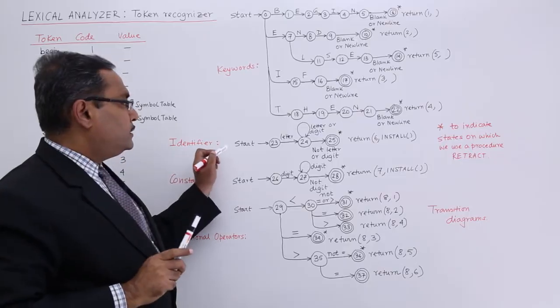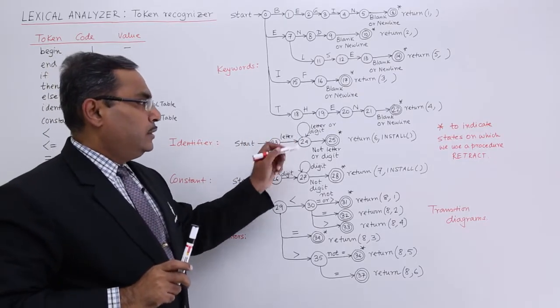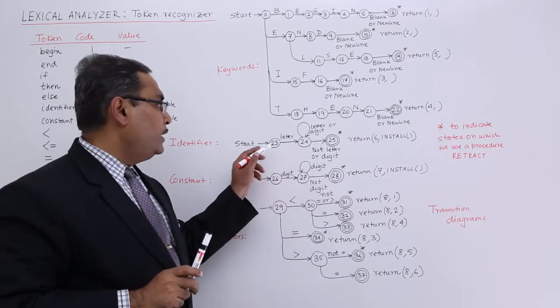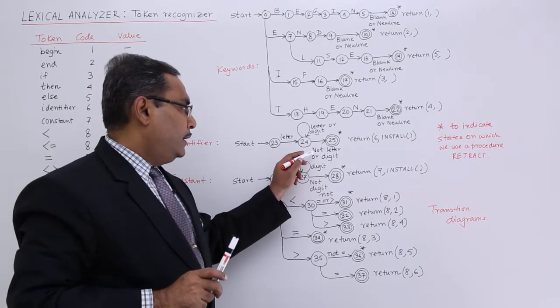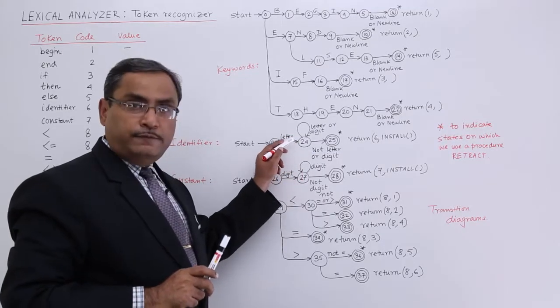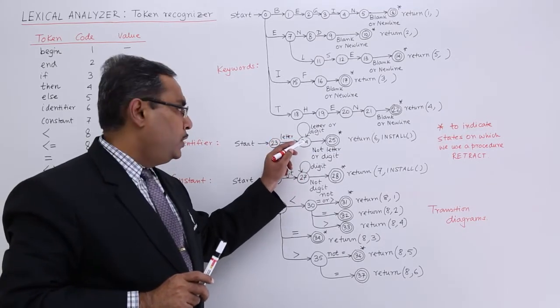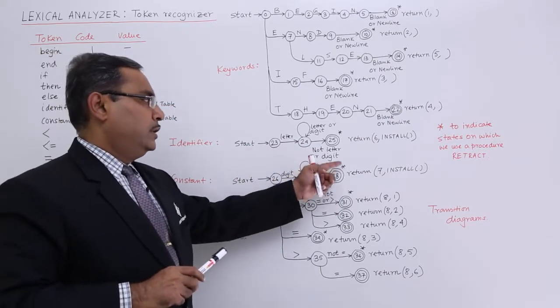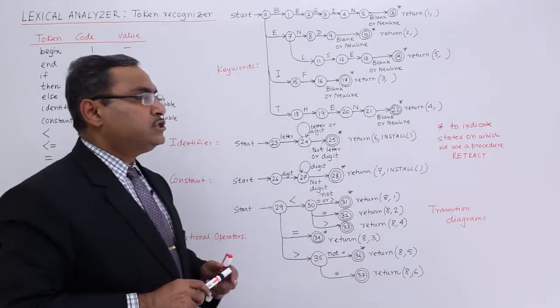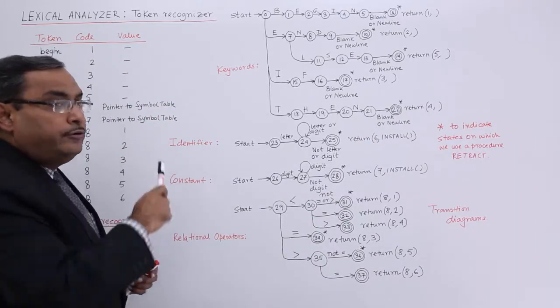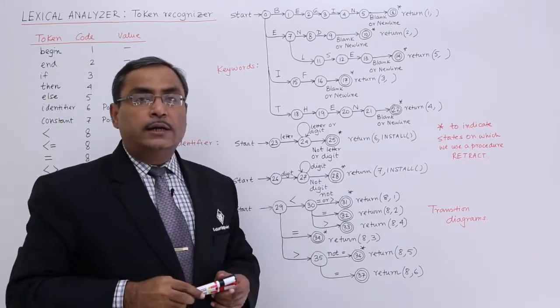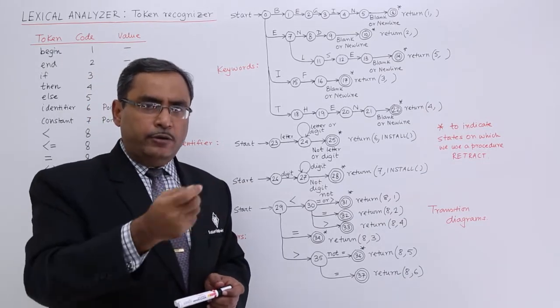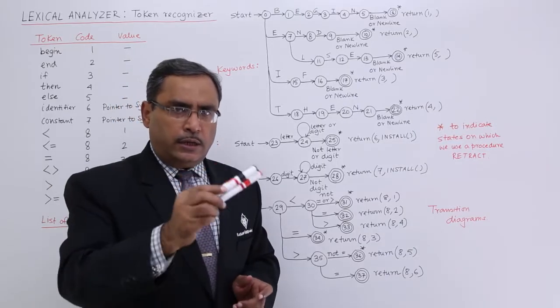Now for the identifier, start letter or digit. In our earlier video we discussed this one in more elaborative way. Letter or digit, so it will go to state 24 which has a self loop, and then not a letter or not a digit, then it will go to 6 and install. Install will write the symbol table, identify in the symbol table, and it will return the address of that record entry.